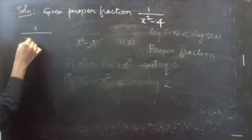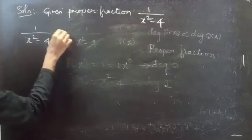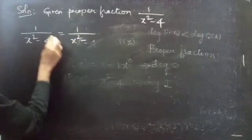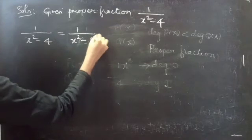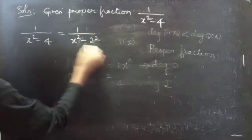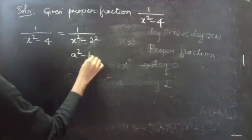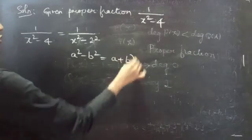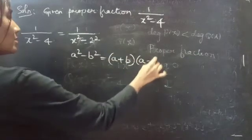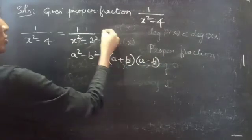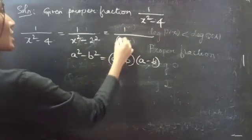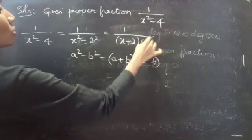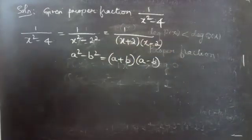We can write x squared minus 4 as x squared minus 2 squared. This is of the form a squared minus b squared, which equals a plus b into a minus b. So this becomes 1 by x plus 2 into x minus 2.